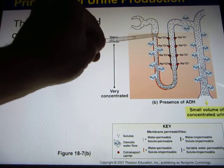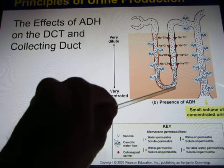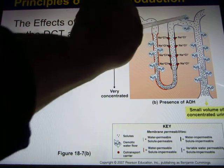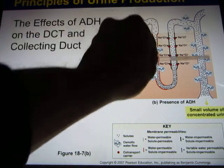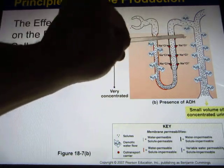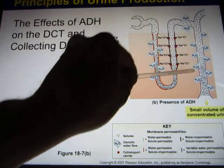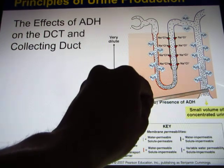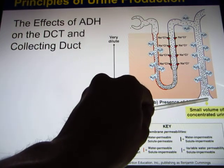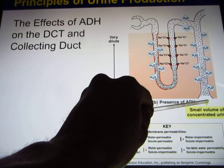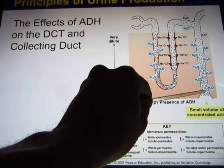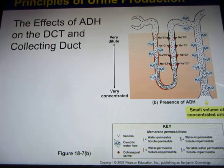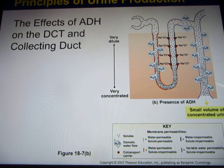In the descending loop you take water back; in the ascending loop you take salt back. And in the collecting duct, when ADH is released, you take more water back. Eventually your urine becomes more and more concentrated. That is what happens when you are dehydrated — your urine is very concentrated, because your body releases a lot of ADH to take a lot of water back.